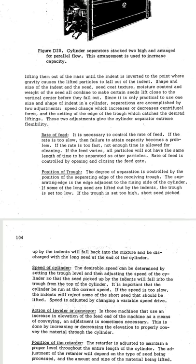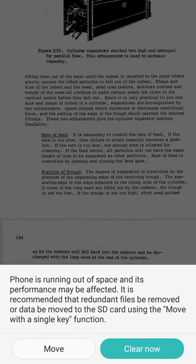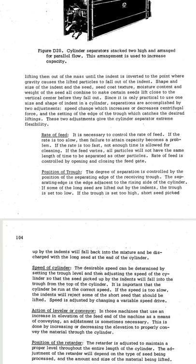The next adjustment is the position of the trough. The degree of separation is controlled by the position of the separating edge of the receiving trough. The separating edge is adjusted to the rising side of the cylinder. If some of the long seed are lifted out by the indents, the trough is set too low. If the trough is set too high, shorter seed picked up by the indents will fall back into the mixture and be discharged with the long seed at the end of the cylinder.